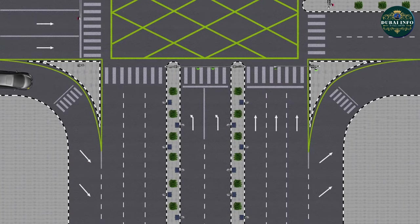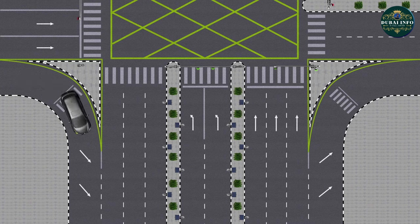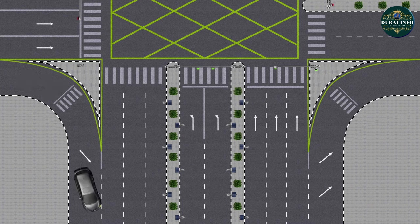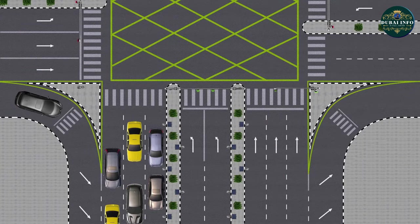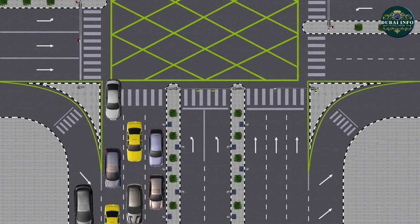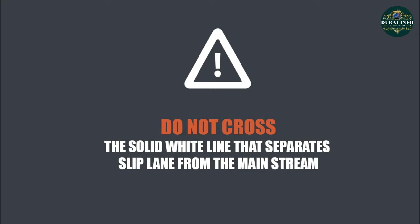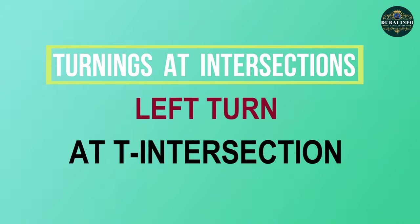If the slip lane continues for a little longer, consider changing the indicator to left before entering the open lane next to the slip lane on the left. If the traffic flow is heavy in the main stream, motorists may drive till the end to adjust in the flow of traffic. Remember, do not cross the solid white line that separates the slip lane from the main stream.